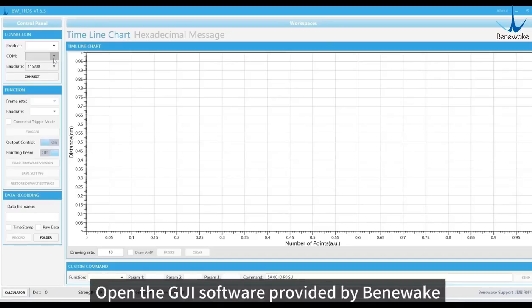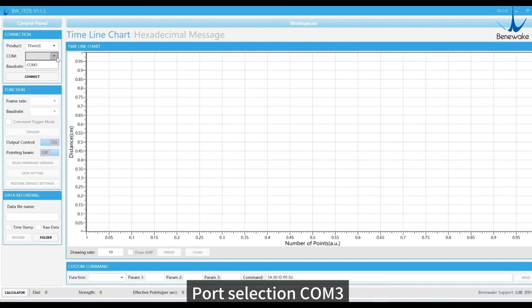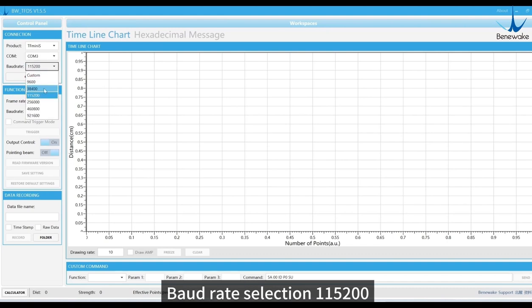Open the GUI software provided by Benewake. Product selection TF Mini S, port selection COM3, baud rate selection 115200. Click the connect button in the right window.